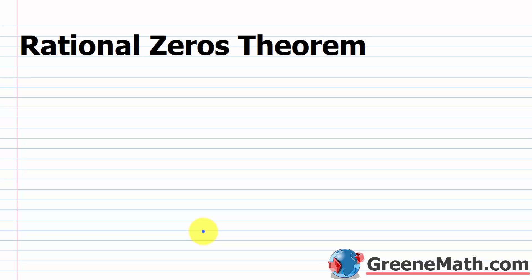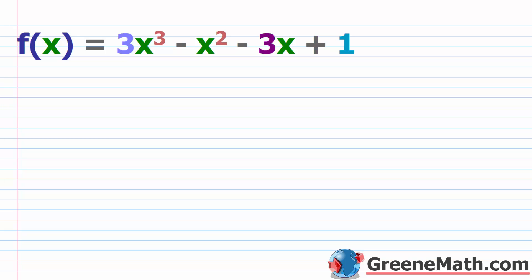In this lesson, we want to talk about the rational zeros theorem. When we work with polynomial functions, we're often asked to find the zeros. For example, given f(x) = 3x³ − x² − 3x + 1, we need to find the zeros. The method we'll focus on today is known as the rational zeros theorem, or the rational roots test.